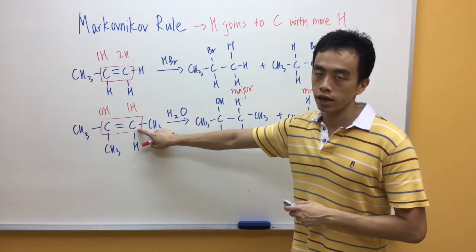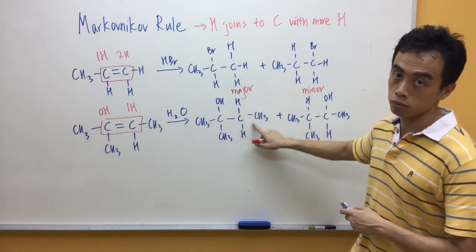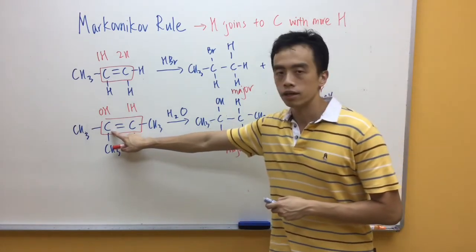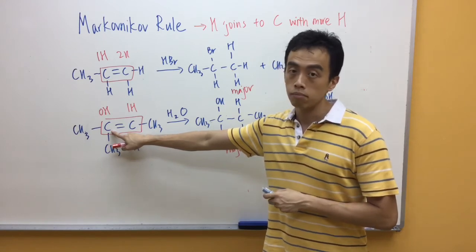Again, the carbon on the right hand side has more hydrogen, hydrogen will join into this carbon, this will be the major product. And carbon on the left hand side has less hydrogen, so the hydrogen joins into this carbon will give us the minor product.